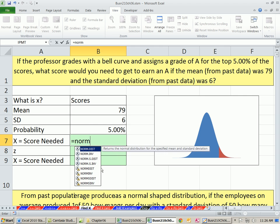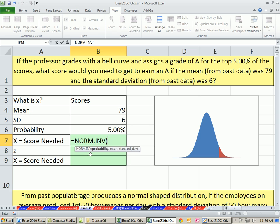We can use the NORM.INV function. We've already seen all these norm functions. The DIST functions take an X and give us probability. The inverse functions take a probability and give us the X.